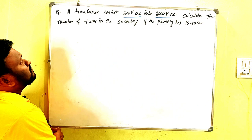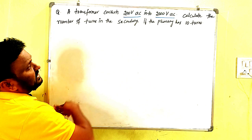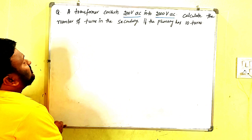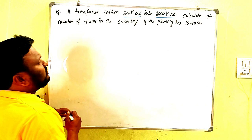A transformer converts 200 volts AC into 2000 volts AC. Calculate the number of turns in the secondary if the primary has 10 turns. Very simple.